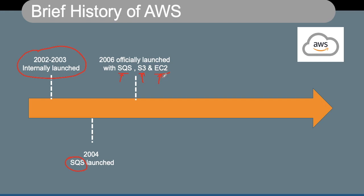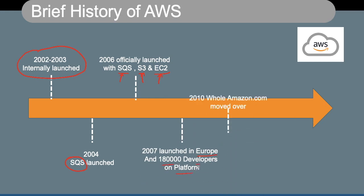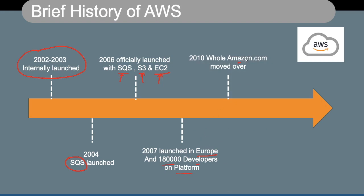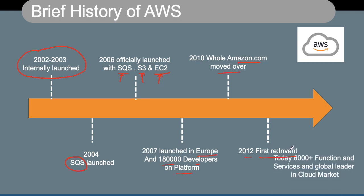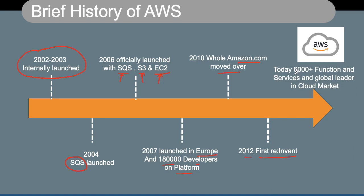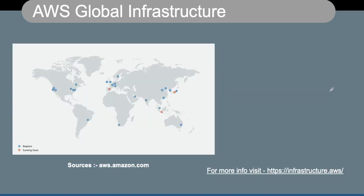We will talk about all these services in future sessions. In 2007, they launched in Europe and had 180,000 developers on their platform. In 2010, amazon.com moved over to AWS. In 2012, they launched the first re:Invent, which is the largest tech event on the planet. Today they have more than 6,000 functions and services, and AWS is the global leader in cloud computing.